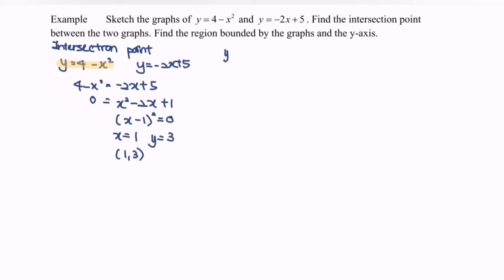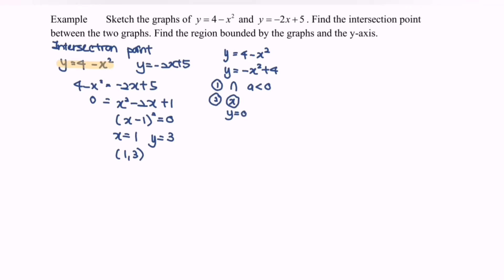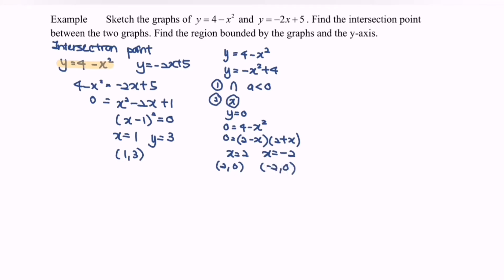Now we sketch the graph y equals 4 minus x squared, rearranged as y equals negative x squared plus 4. The shape is an n-shape because a is less than 0. For the x-intercept, when y equals 0, we get 0 equals 4 minus x squared, which factors as (2 minus x)(2 plus x), giving x equals 2 and x equals negative 2. The points are (2, 0) and (negative 2, 0). For the y-intercept, when x equals 0, y equals 4, so the coordinate is (0, 4).